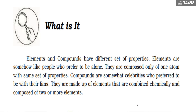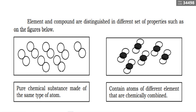Elements and compounds have different sets of properties. Elements are like people who prefer to be alone — they are composed of only one atom with the same set of properties. Compounds are like celebrities who prefer to be with their fans — they are made up of elements combined chemically and are composed of two or more elements. The first figure shows a pure chemical substance made of the same type of atom — that is an element. The figure on the right contains atoms of different elements that are chemically combined or bonded — that is a compound.